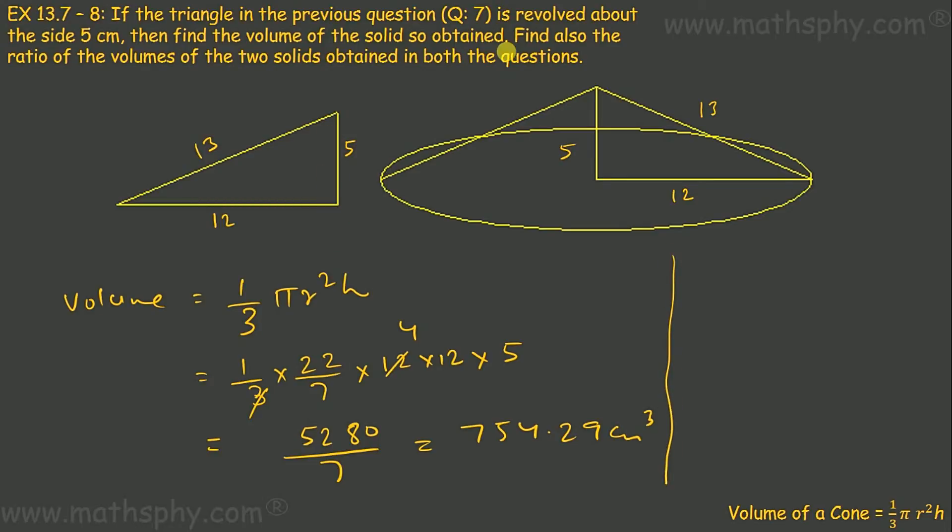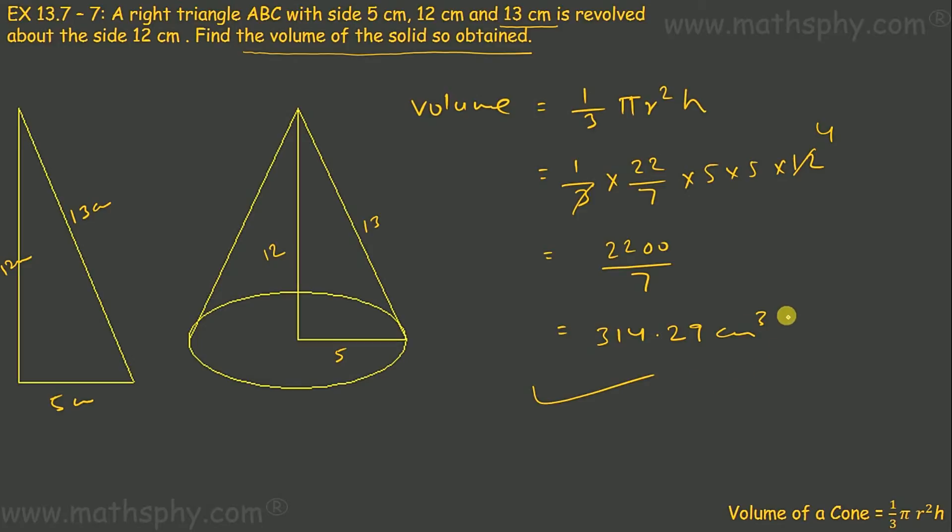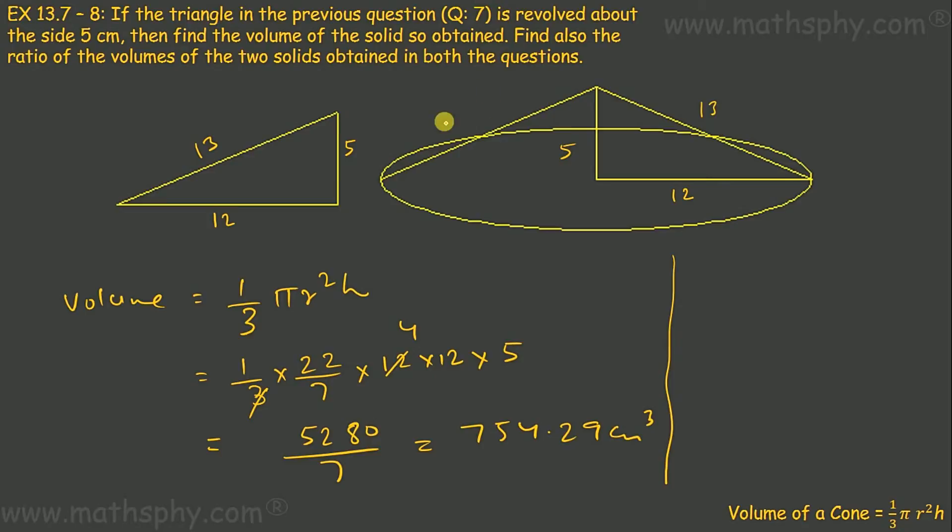Then it says find also the ratio of the volumes of two solids obtained in both the questions. In the previous question I have obtained this volume which is 314.29. In this question or from this cone I have obtained this volume. So ratio would be 314.29 over 754.29.